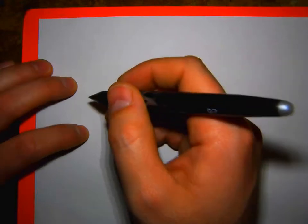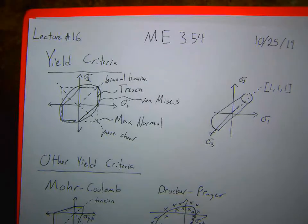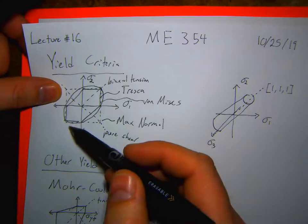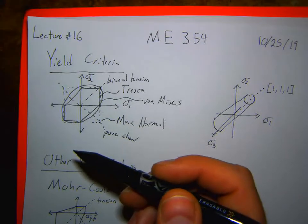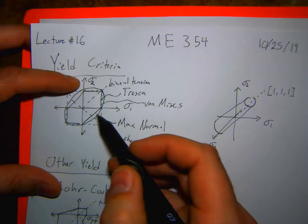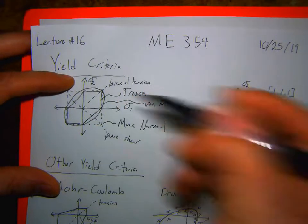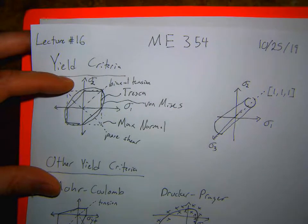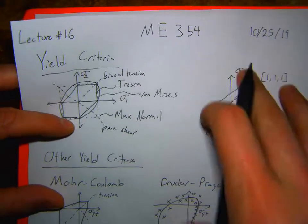Now I'm going to switch gears and go through a couple different types of failures and loading states you should know, and how failure is going to occur in those loading states. We talked about yield surfaces for a complex state of stress — how is failure going to occur? We also need to think about what direction will cause failure. Generally, this breaks down into whether a material is brittle or ductile: if it's brittle, it'll generally fail in tension; if it's ductile, it'll fail in shear.